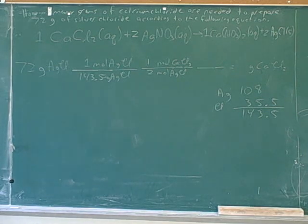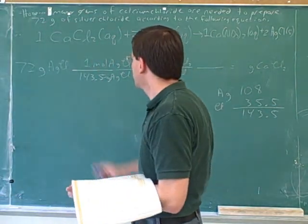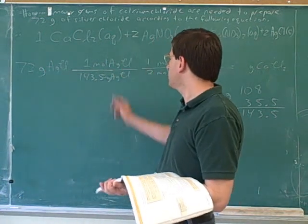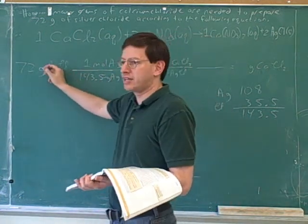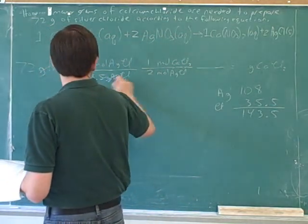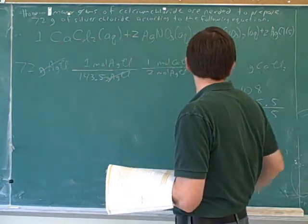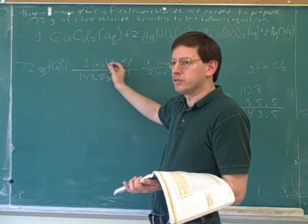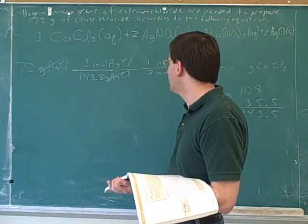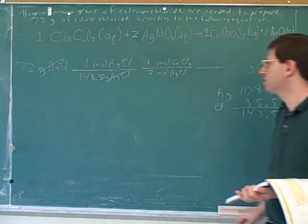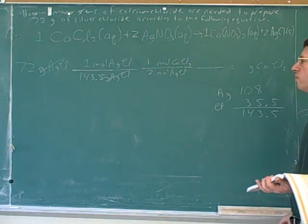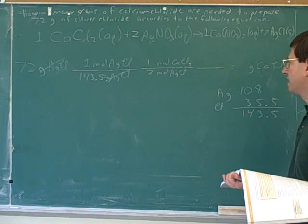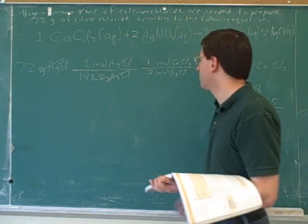Let's talk through this together now. Here are our starting units. It should be clear that these units should be grams of silver chloride to cancel these units. Now, what we care about is calcium chloride, but we can't go straight to calcium chloride — we have to go through the moles. So we have to go to moles of silver chloride, and here we use the molar mass of silver chloride, which we get from the periodic table. That comes out to be 143.5.